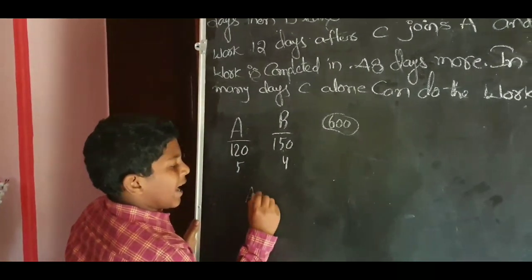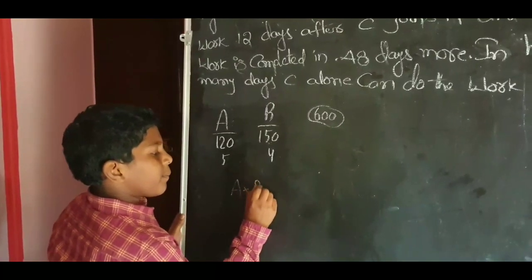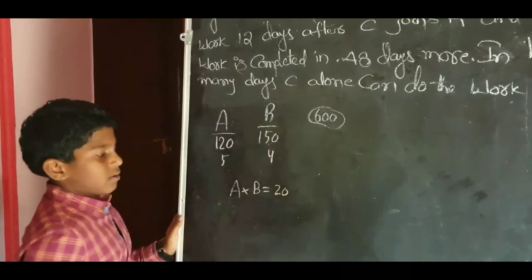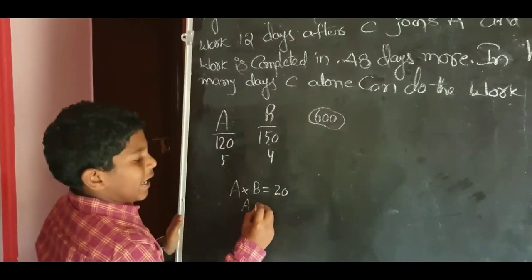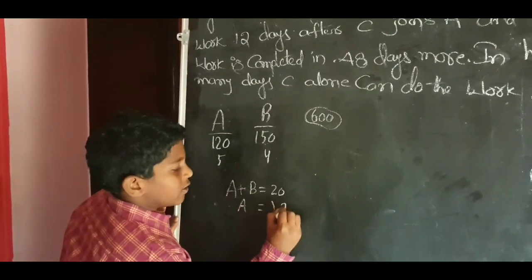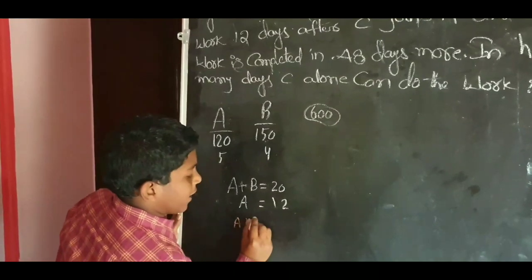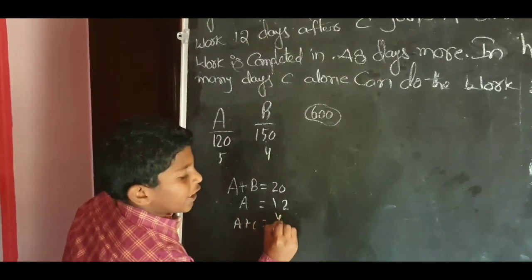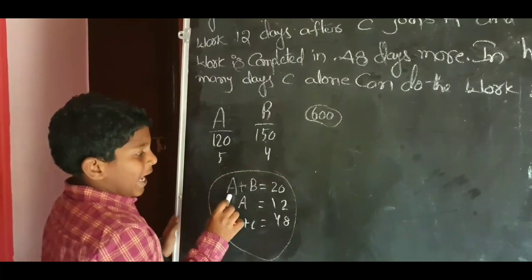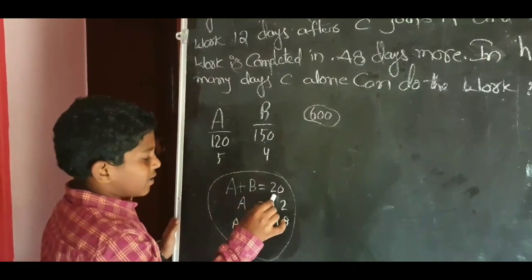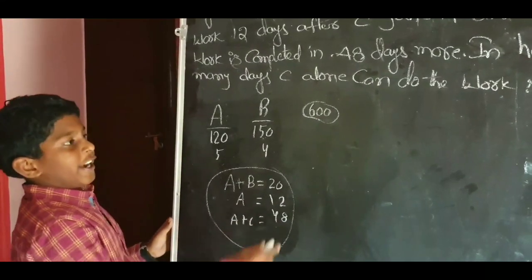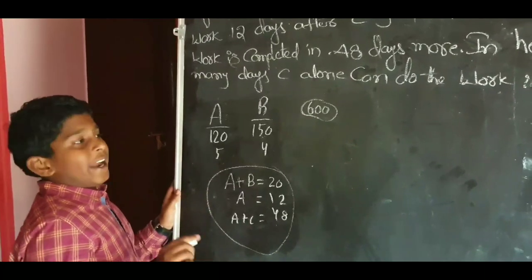Both A and B work together for 20 days. Then B leaves and only A works for 12 days. Then C joins A for 48 days. So A worked with B for 20 days, only A for 12 days, and with C for 48 days.